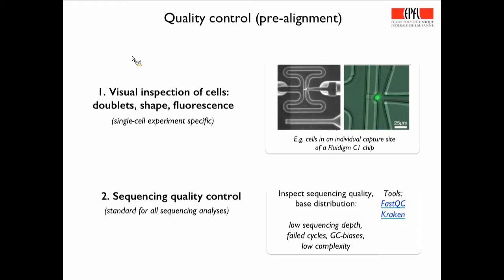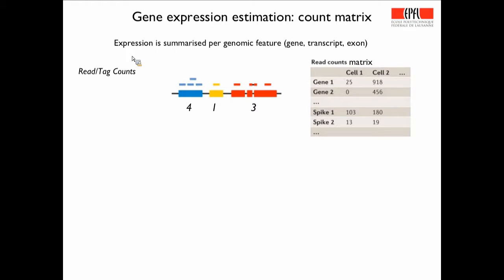Assuming the cell capture goes well, you can move to sequencing quality control. I'm not going to dwell on this as it's the same as for bulk RNA-seq — using popular tools such as FastQC to deal with low sequencing quality, phase cycles, GC biases, low complexity, and so forth. Then we want to derive a count matrix, which is a gene-by-cell matrix. With thousands of cells this will be a very large matrix. You need to align reads to the genome or transcriptome to get reads and tag counts. This is where I will introduce unique molecular identifiers.